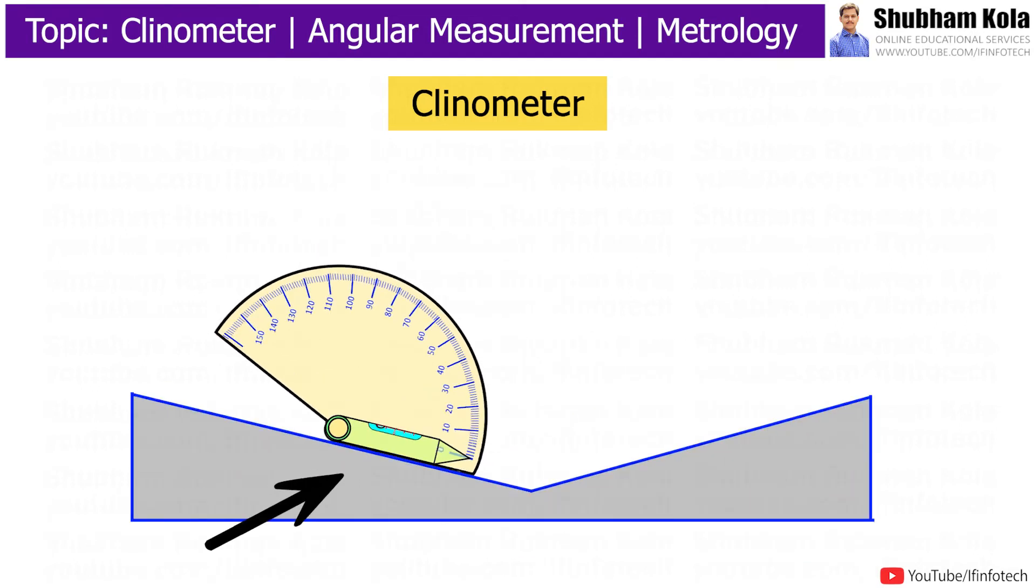If the clinometer is placed on inclined surface, the bubble deviates from center. It can be brought to center by rotating rotary member. The rotation of rotary member can be read on scale. It represents deviation of surface over which clinometer is placed from the horizontal plane.